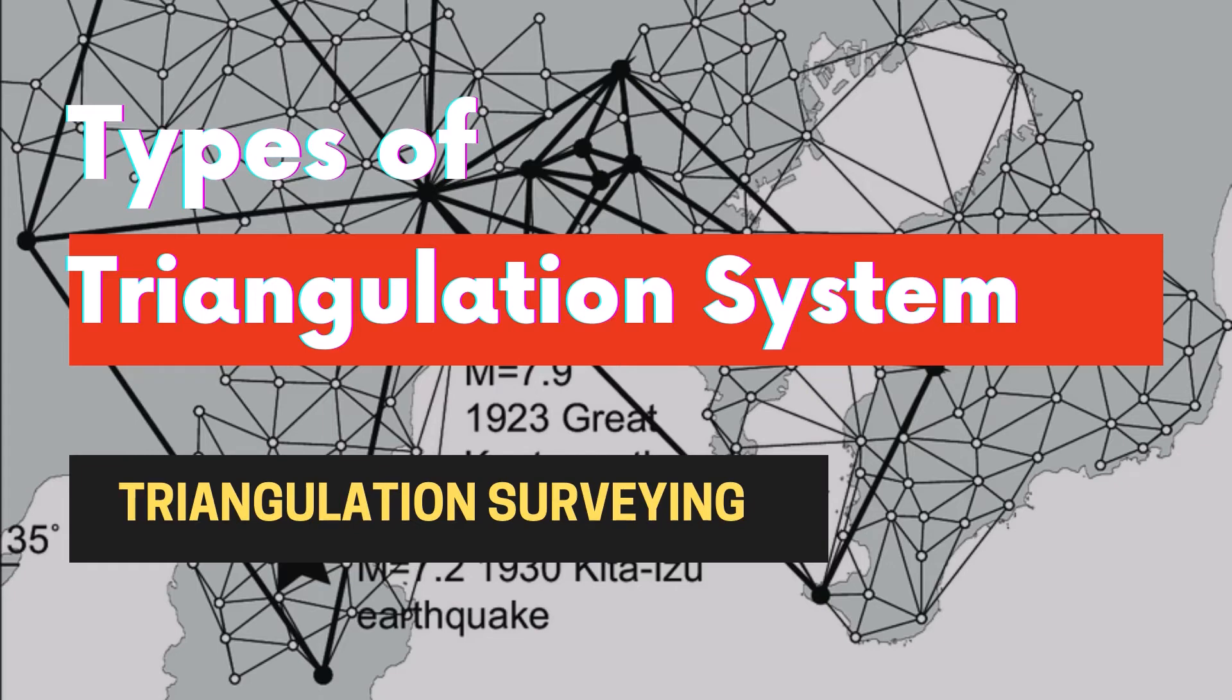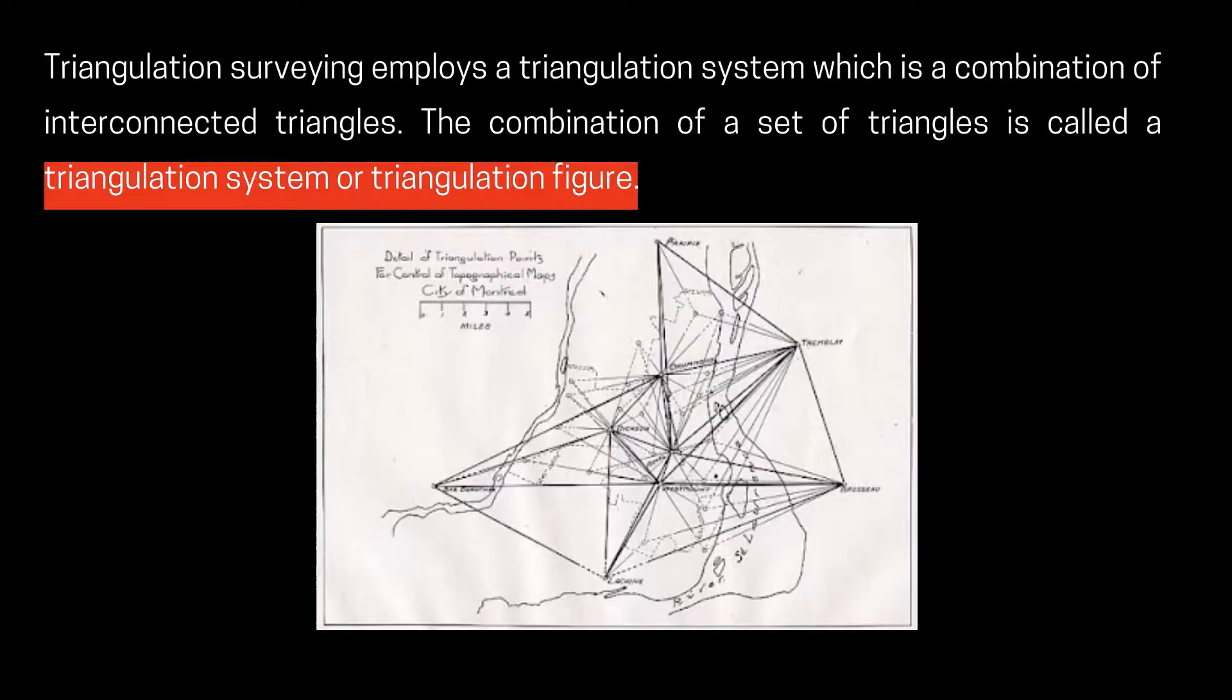Classification of triangular system in triangulation surveying. Triangulation surveying employs a triangulation system which is a combination of interconnected triangles. The combination of a set of triangles is called a triangulation system or triangulation figure.